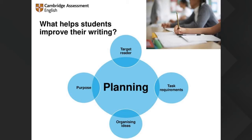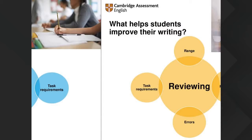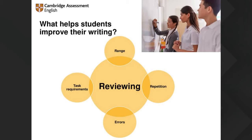Apart from content, think about task requirements and purpose. The purpose is going to affect everything about the piece of writing. Who your target reader is will affect the type of language you use. Purpose and target reader overlap quite a bit. And reviewing — checking that you've included a wide range of appropriate vocabulary, simple and more complex grammar, not repeating ideas, checking for slips, and making sure you've included all the content points and task requirements.